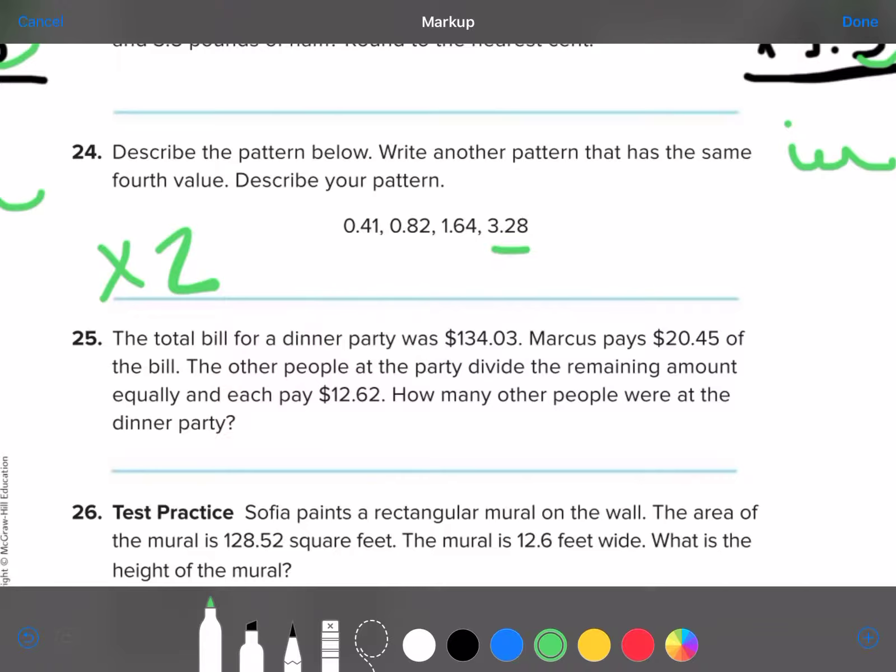So, what you're going to do is you're going to take that number and you're going to times it. Write another pattern that has the fourth value. The same fourth value. All right. They're going to get a little tricky with this one. So, I'm okay if you just put times 2.